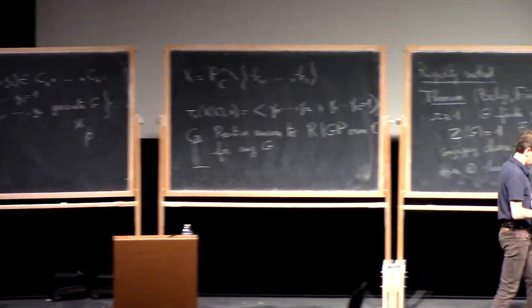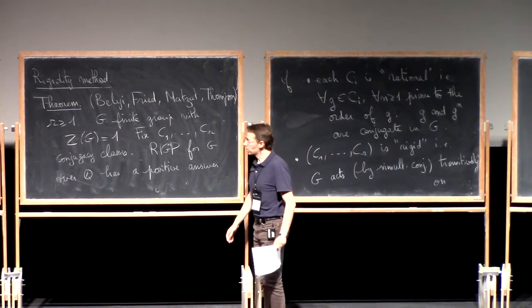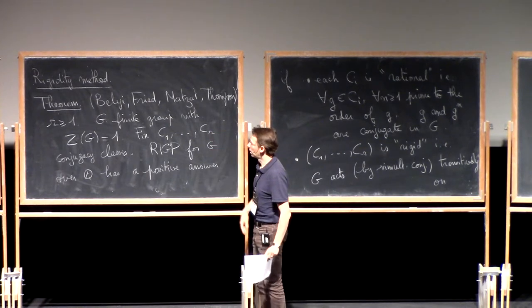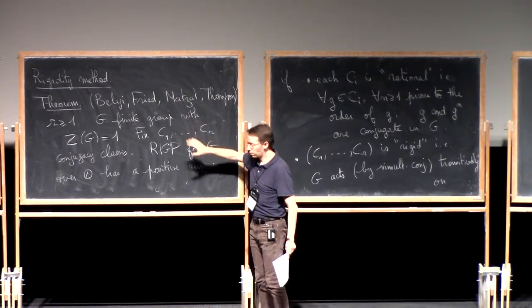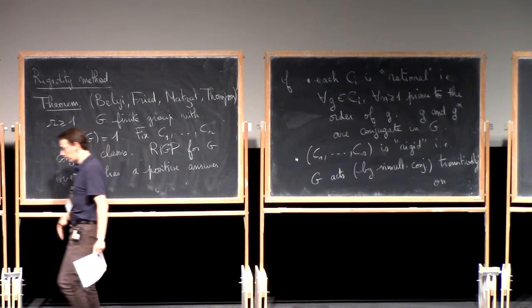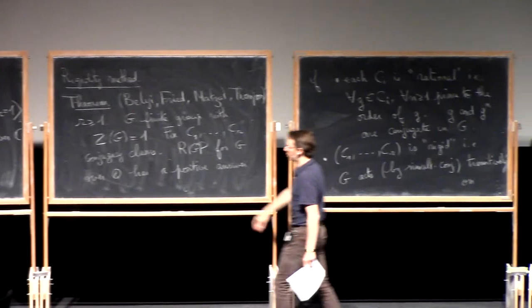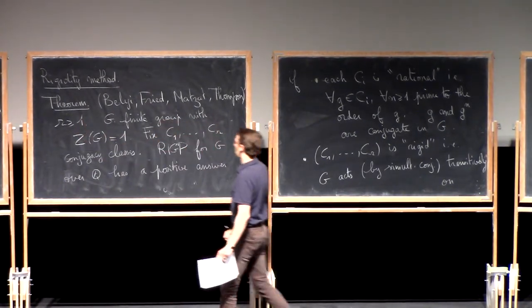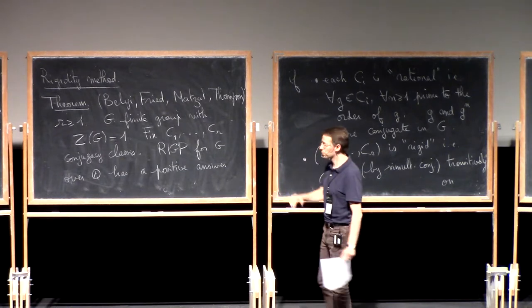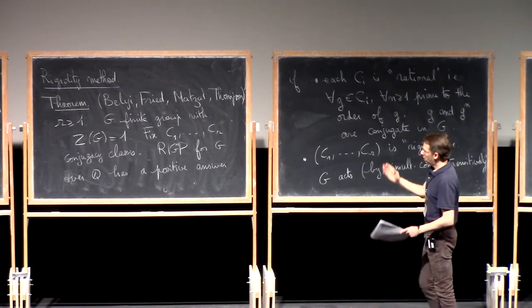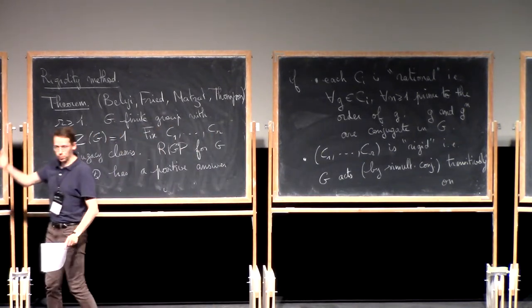As I said, it's a very down-to-earth statement, and what's surprising is that it's extremely useful. There are many groups which have been shown to be Galois groups over ℚ because we could apply this theorem. In particular, the assumptions are known to hold for at least 10 of the sporadic simple groups exactly in this form, with even a very small value of r — r equals 3. And for many other classes of groups, for example PSL₂(𝔽ₚ) for infinitely many values of p.